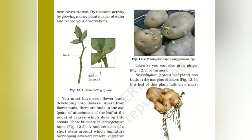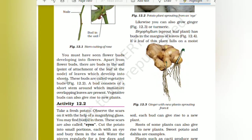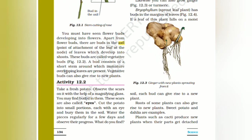If you take a money plant and keep it in a glass pot, you can see roots coming out from it. Buds develop in the axil, that is the point of attachment of the leaf and the node. These buds develop into shoots and are called vegetative buds. A bud consists of a short stem around which many overlapping leaves are present. Vegetative buds can also give rise to new plants.